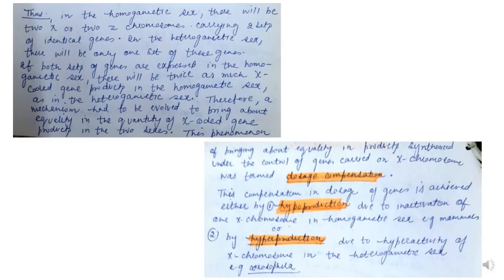In homogametic sex, there will be two X or two Z chromosomes carrying two sets of identical genes, while in heterogametic sex there will be only one set of these genes. If both sets of genes are expressed in homogametic sex, there will be twice as much X-coded gene products in homogametic sex as in heterogametic sex.